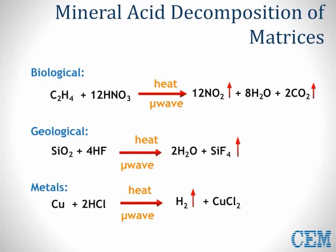When acids are heated in a microwave, they begin to break bonds, as shown in this diagram. The first reaction represents an organic reaction in which lots of carbon dioxide and nitrous oxide gases are released. Vessels must be able to handle the production of these gases. The second and third reactions represent different types of inorganic reactions which produce much less gas.